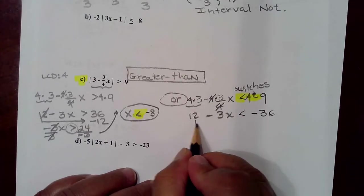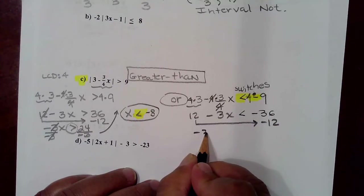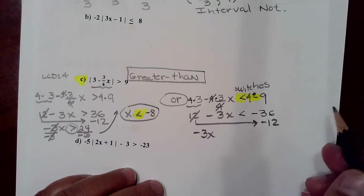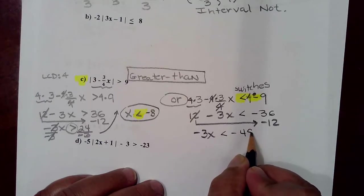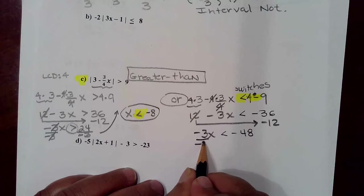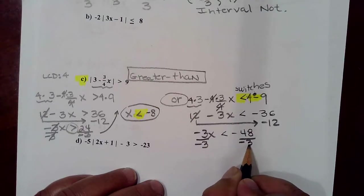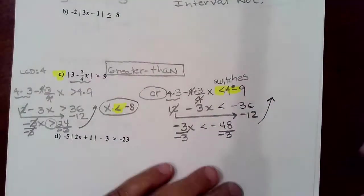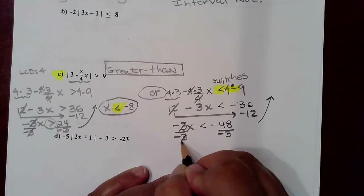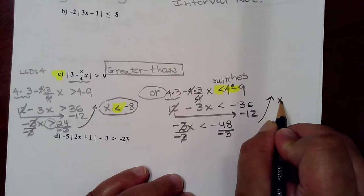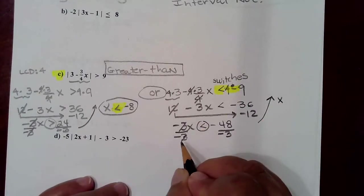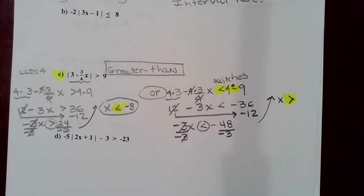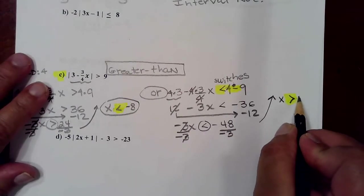Then we're going to move the 12 over to the right-hand side, resulting in negative 12, so this 12 will no longer be on the left — combined on the right it will be negative 48. Then you're dividing again by a negative on both sides, which is going to result in the negative 3s canceling, the direction switches because you're dividing by a negative, so x is greater than 48 divided by negative 3, which is 16.